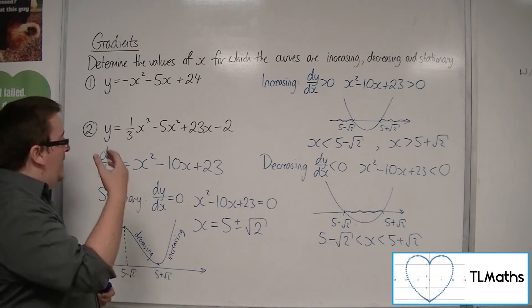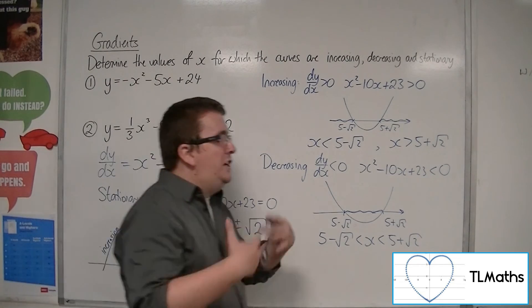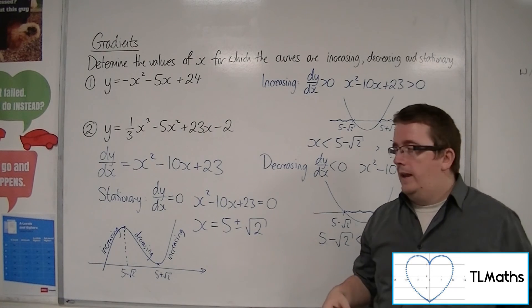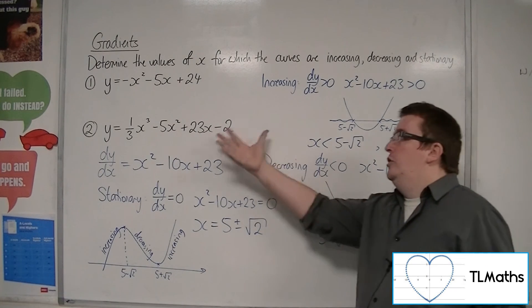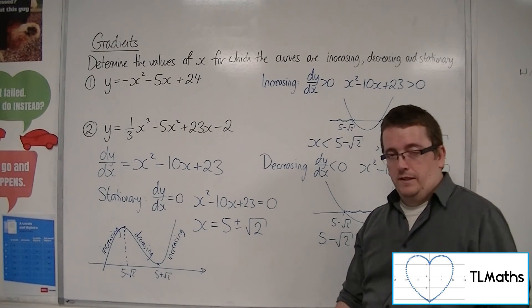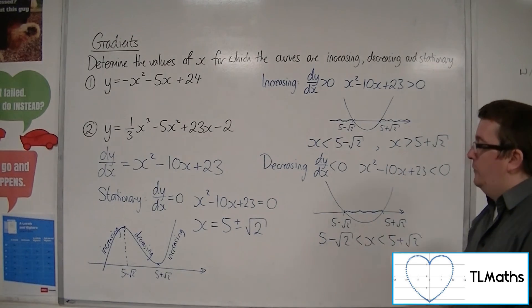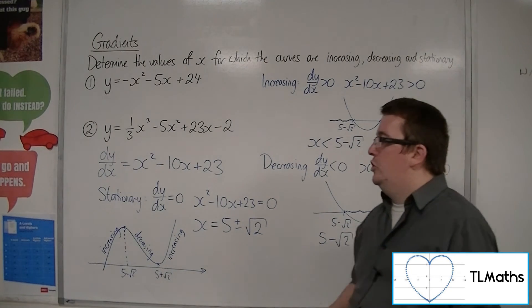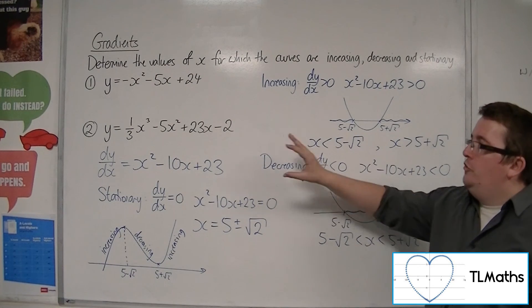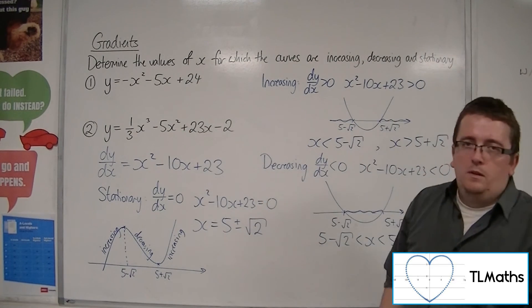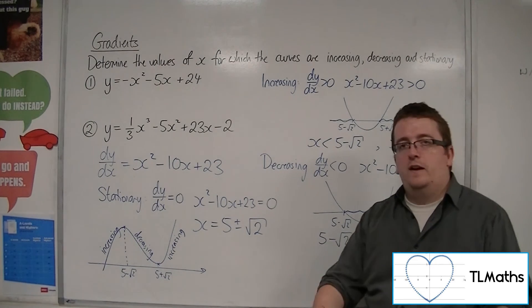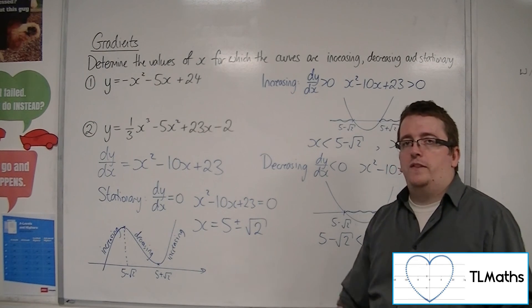So, if you know what the graph looks like, you can use that to inform you of the inequalities. If it was a function that we didn't know what it looked like, that would be a little bit more problematic. But at this level, at this stage, we shouldn't have to worry too much about what the graph looks like beyond a parabola and a cubic. It's more likely going to be a cubic. But you could extend it further once you are more familiar with other types of graph.